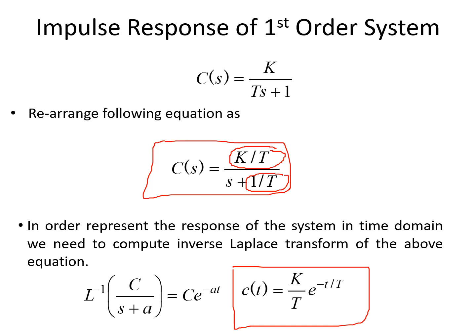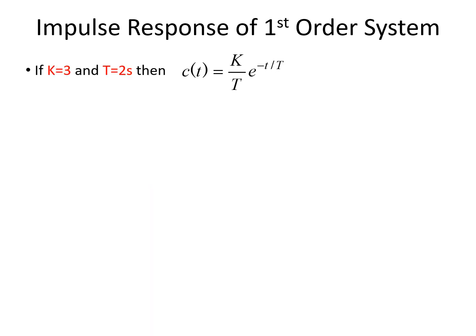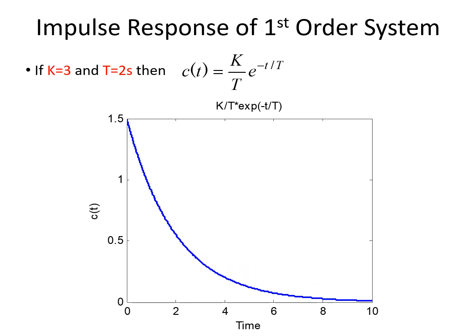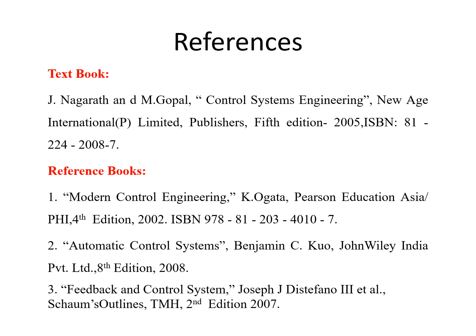If we take K equal to 3 and T equal to 2 seconds, the response starts at 1.5 and decays exponentially. Replacing values for T as 2, 4, 6, and 8, it is an exponentially decaying signal — the response for the impulse input given to the first order system. You can take a few values and analyze the type of response you are going to get for this particular system.